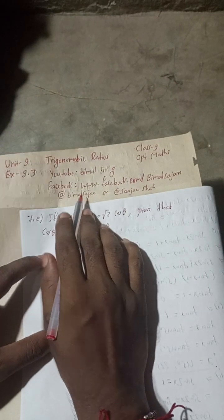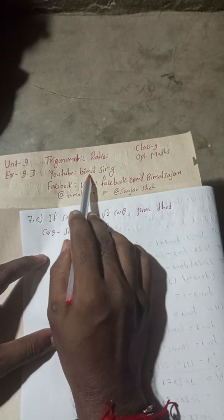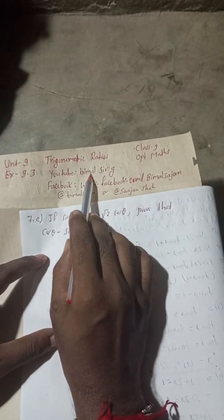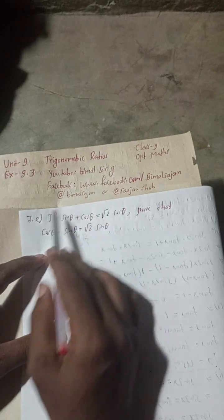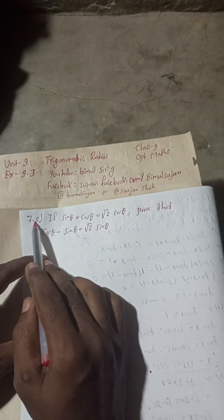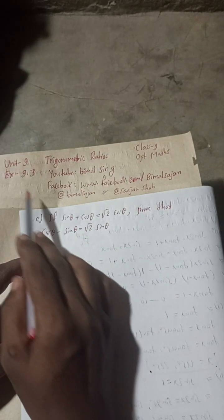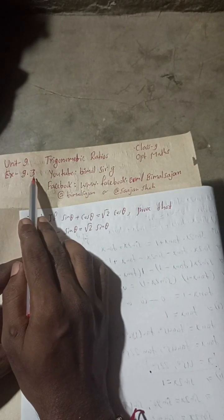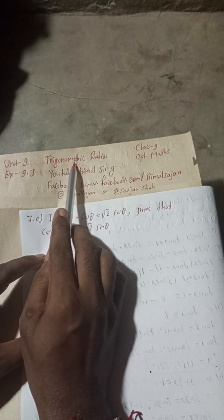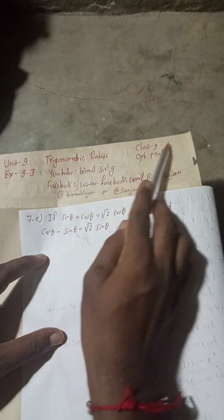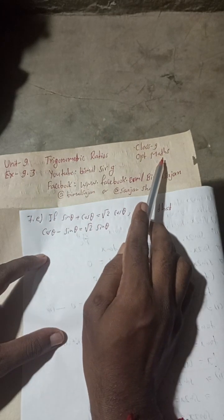Radhe Radhe, Jaya Shree Krishna. Class 9 and 10 students, welcome back to Vimal Sarji YouTube channel. This is question number 7E, exercise 9.3, unit 9, trigonometric ratios, class 9 optional maths.